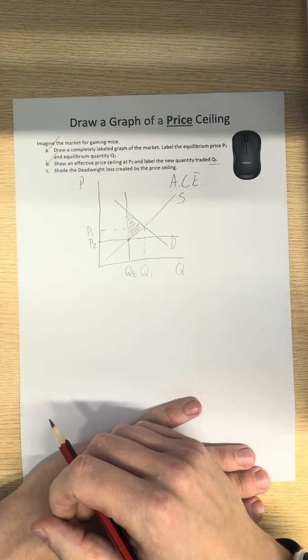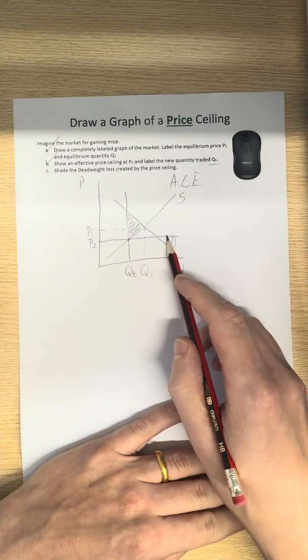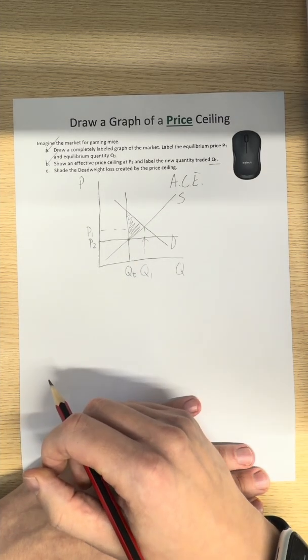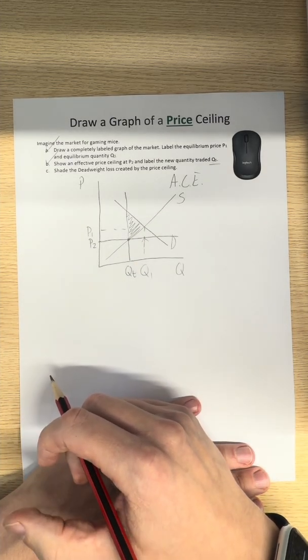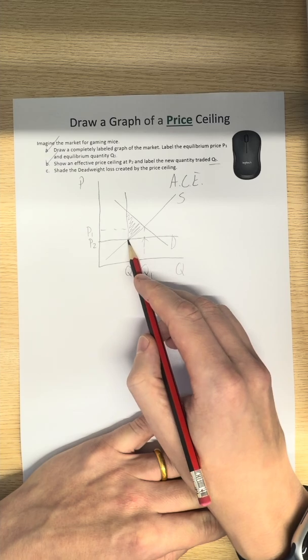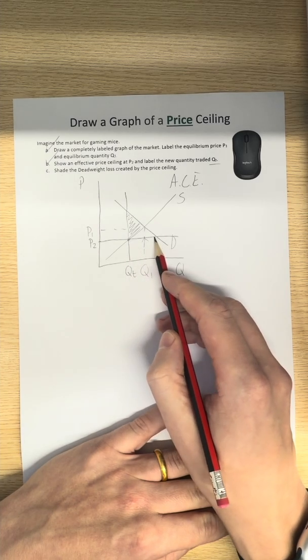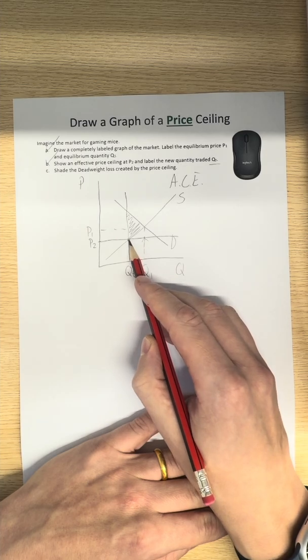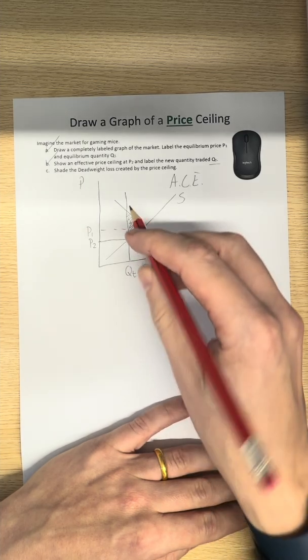So, this artificially low price of P2, not allowing the price to reach its equilibrium of P1, is creating a shortage of gaming mice and is reducing the quantity that actually gets sold.